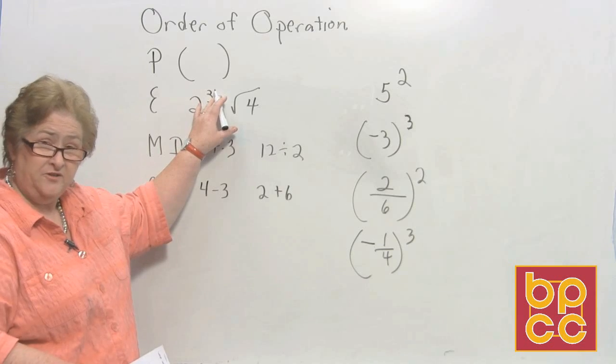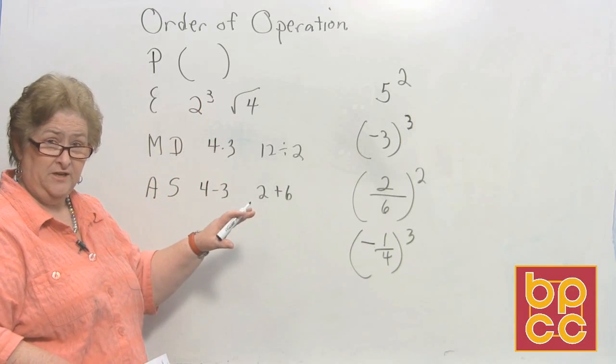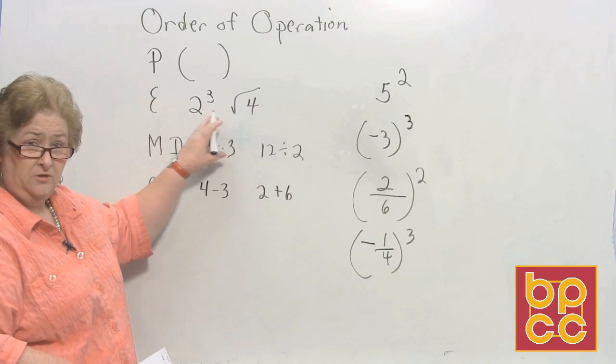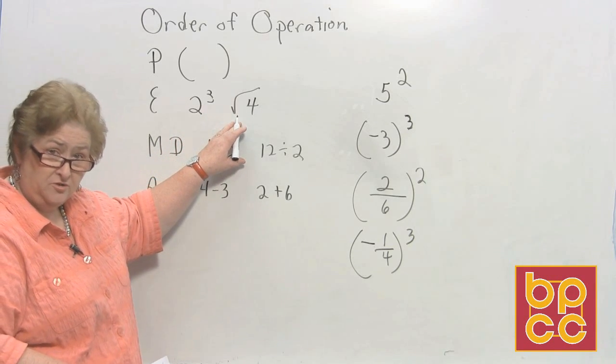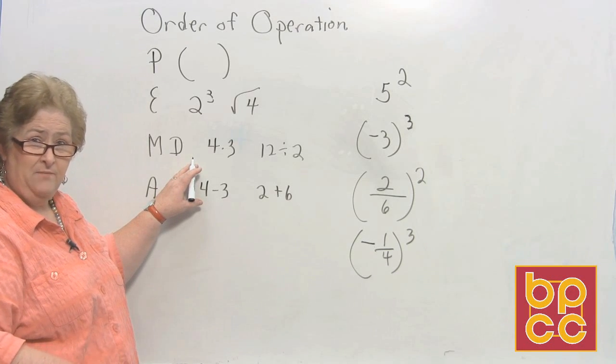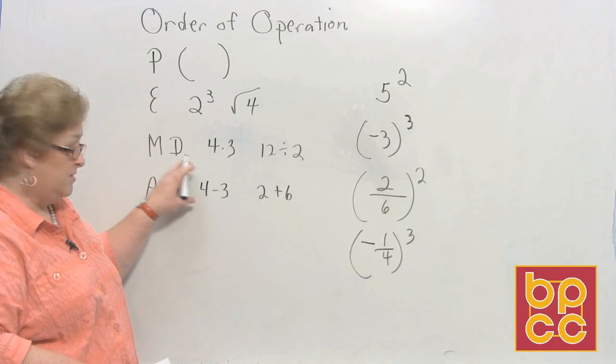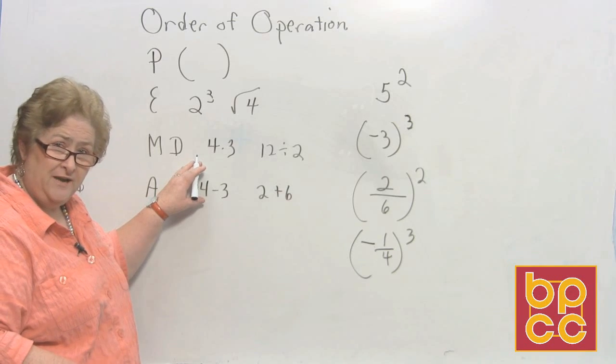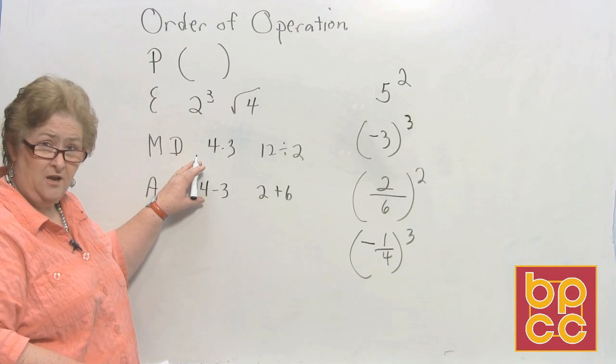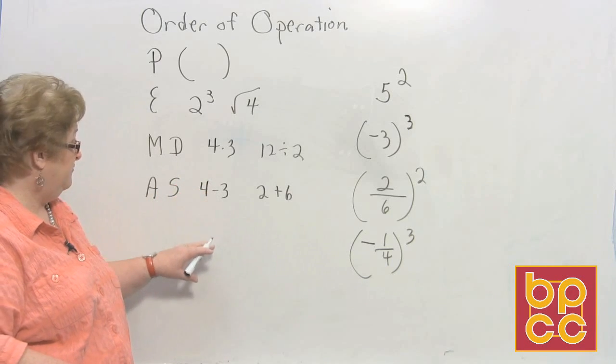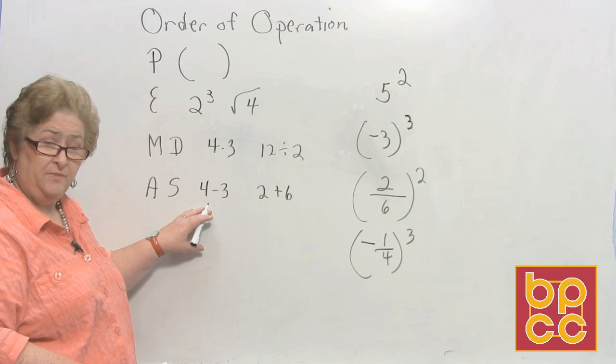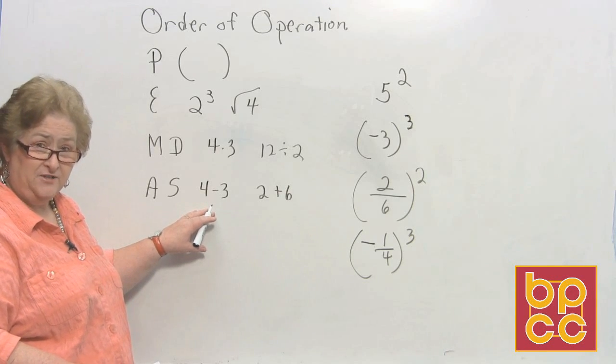Remember that P stands for parentheses and anything in parentheses needs to be done first. And then if we have any exponents or square roots like 2 to the 3rd or the square root of 4 we'll do those next. In the past many students thought that multiplication came ahead of division and so I've written it this way to let you know that both multiplication and division are equals and they should be done in a problem as they come from left to right. And then the lowest level of order of operation is our addition and subtraction. They too are equals and should be done from left to right as they come in the problem.